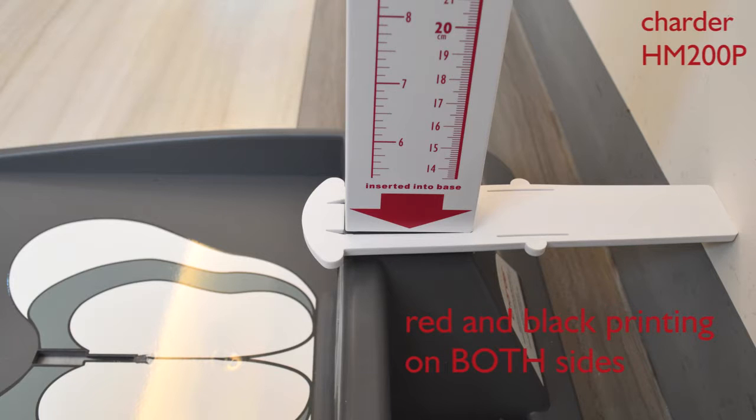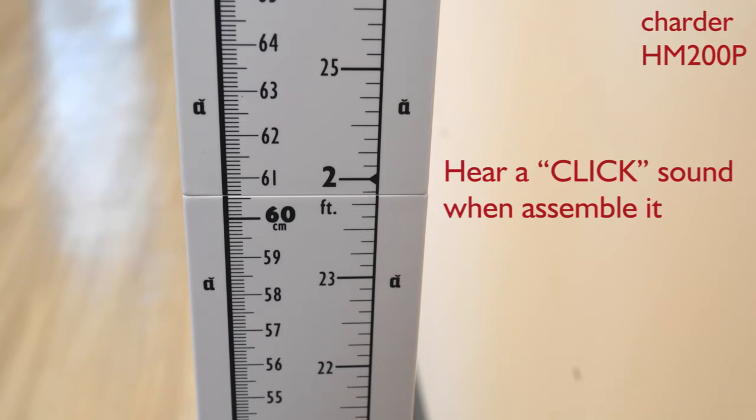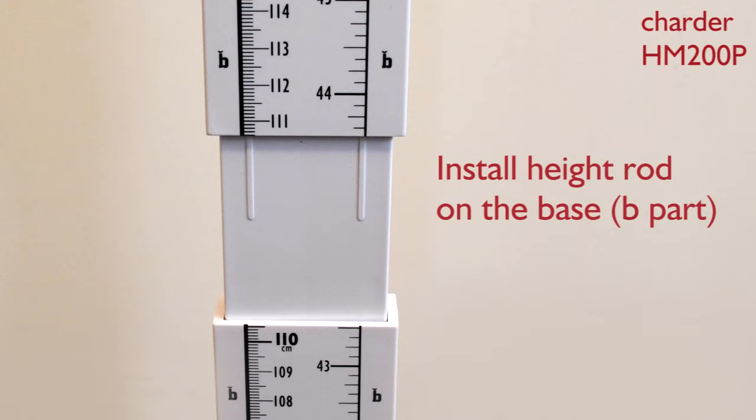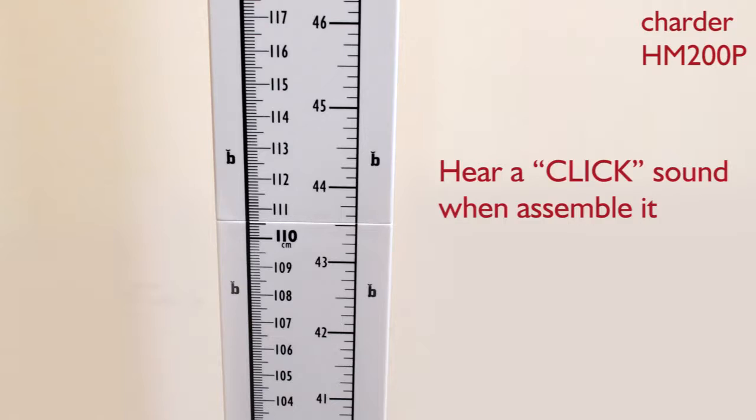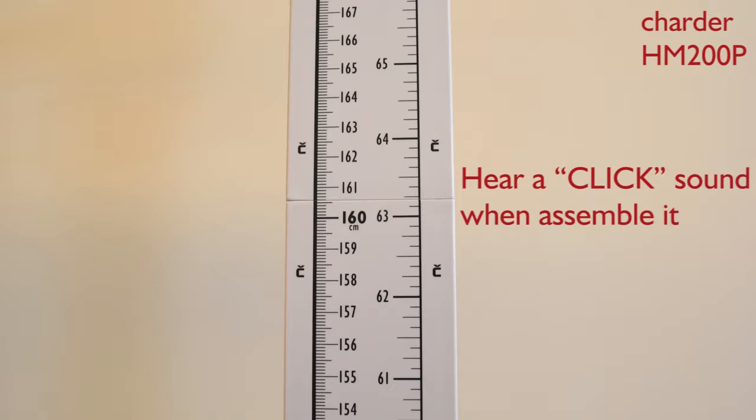One side of printing is red, the other side is black. Assemble rod A and A together, then rod B and B together, then rod C and C together. Each connection is secure when you hear a click sound.